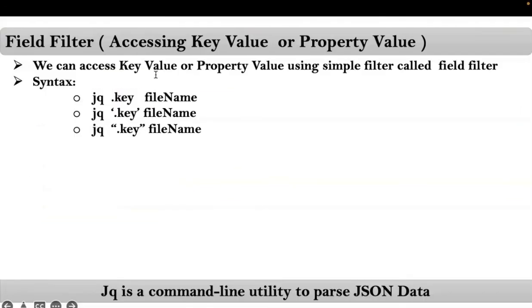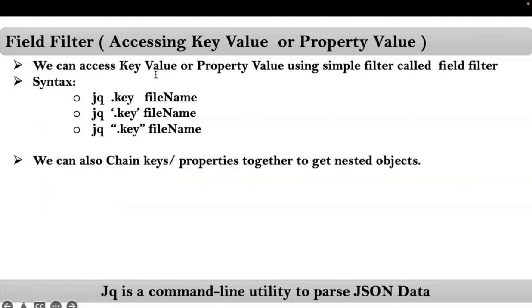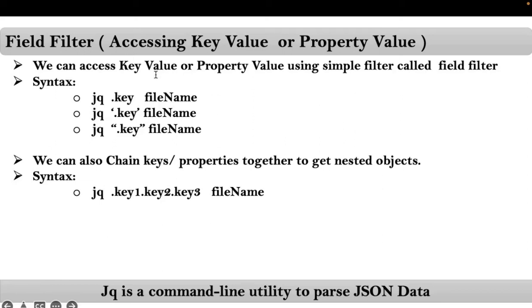We can also chain these keys or properties together to get nested objects. The syntax is simply 'jq .key1.key2.key3' and so on, in case you have n number of keys recursively in your JSON data, and then finally the file name.